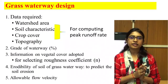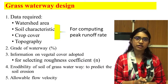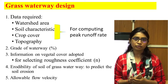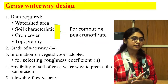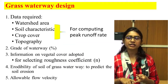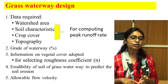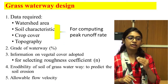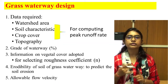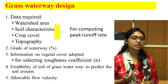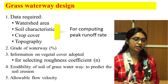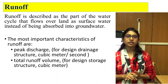Here we list the data required for designing the waterway. It includes data based on the watershed: watershed area, soil characteristics such as type and texture of soil, crop cover, and topography. All these data are used for calculating the peak runoff rate. We also need the grade of the waterway — that is, the slope — information on vegetation cover for selecting the roughness coefficient, erodibility of soil to predict soil erosion, and the allowable flow velocity to be assumed.